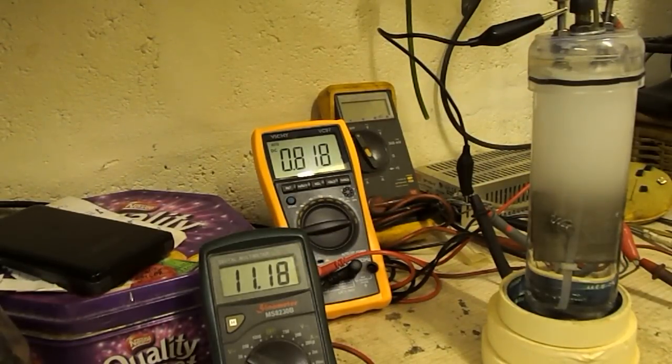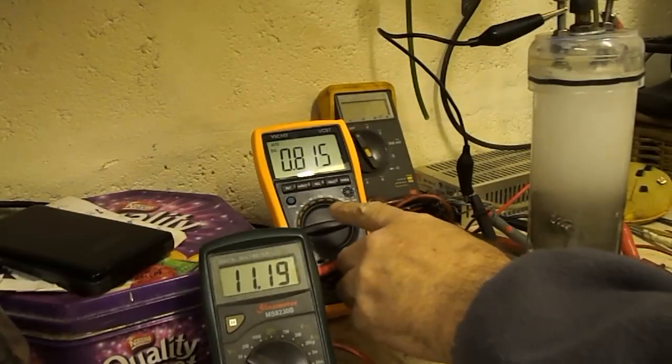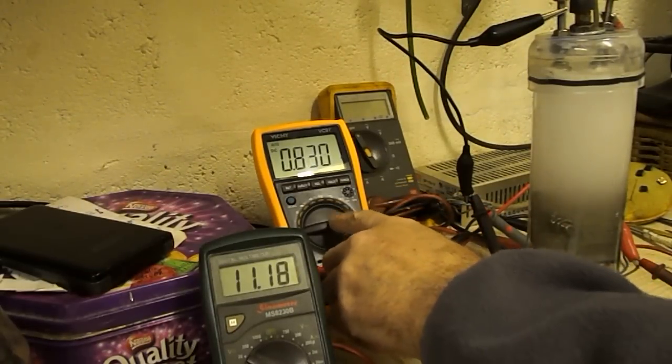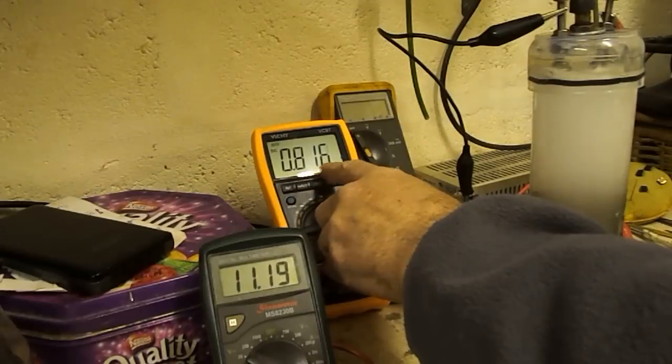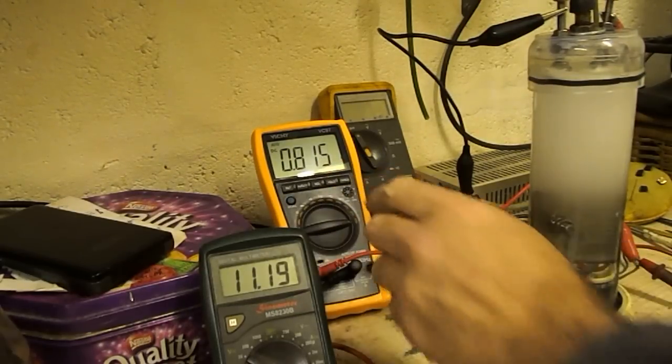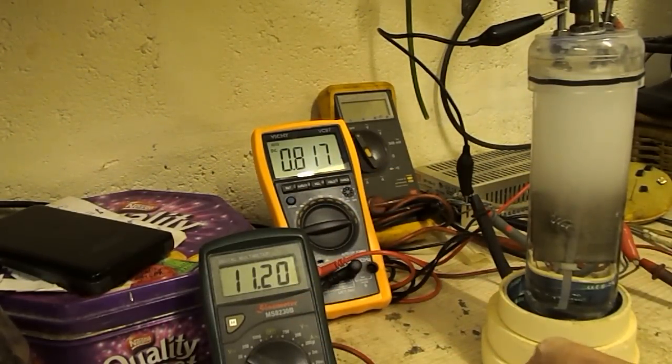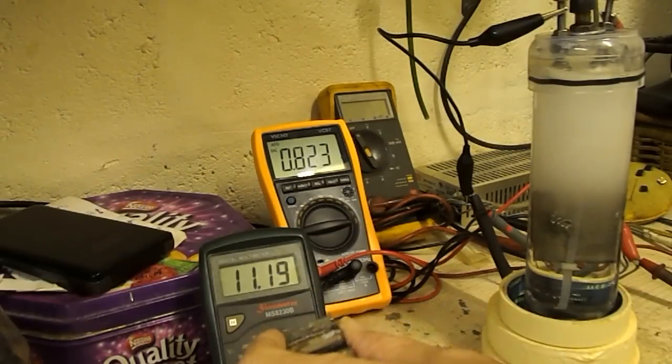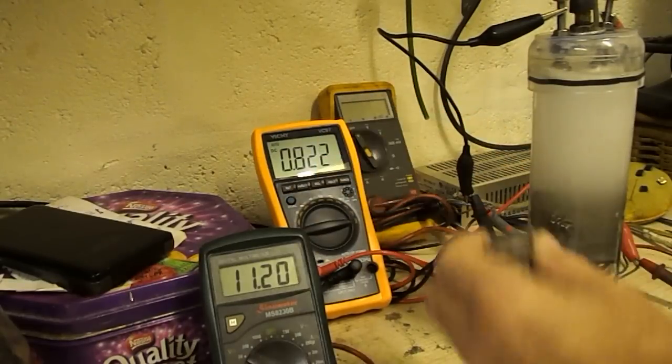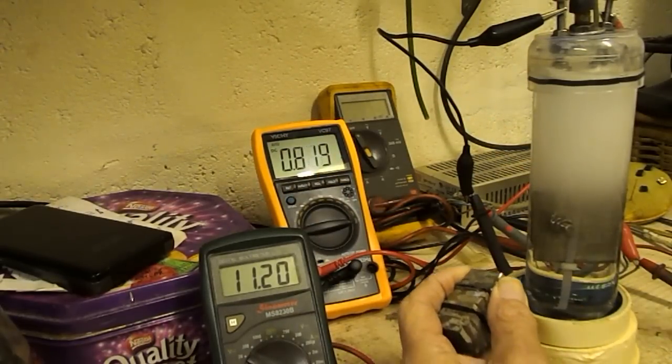Hello everyone, if you look on the voltmeter, the ammeter you'll see it's 0.816 of an amp, 11.19 volts. Magnets don't affect the meters, I'm going to put them on here.